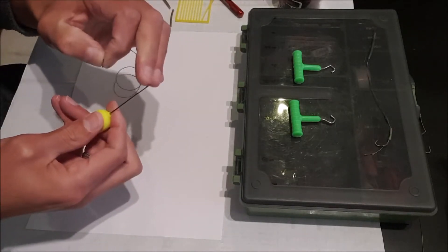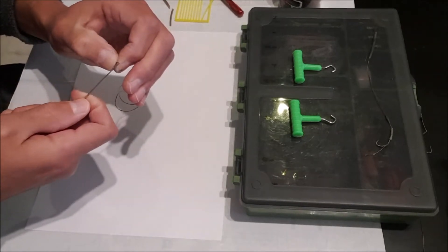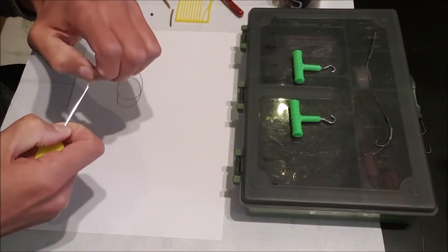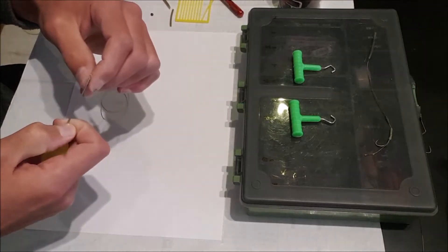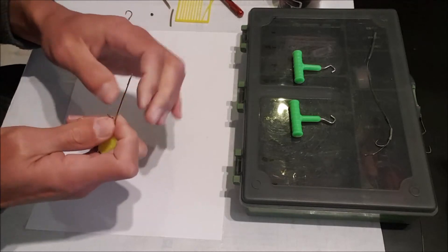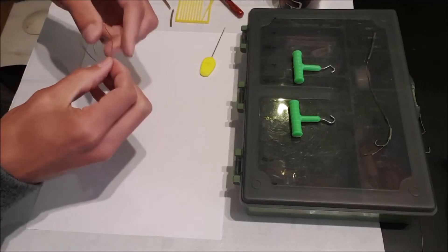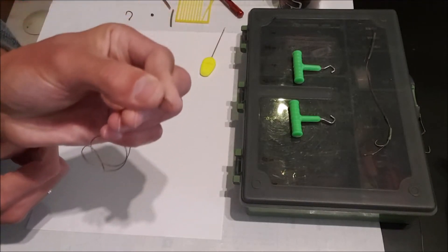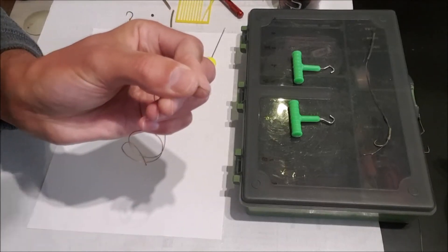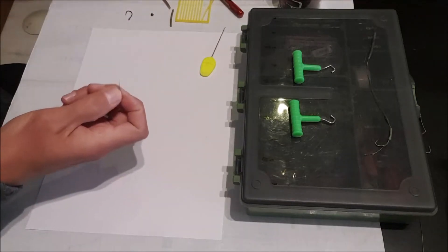Take a latch needle, stick it through, pull it down. Here's our loop for a boilie, the boilie stop. Cut off the tag end.